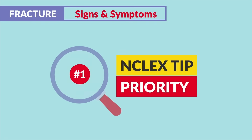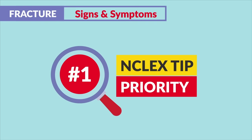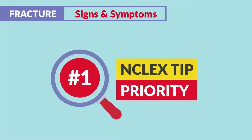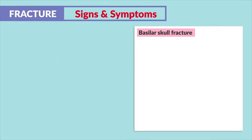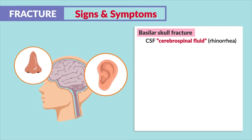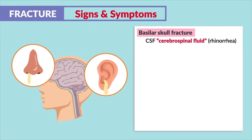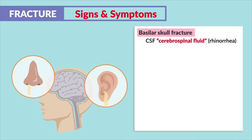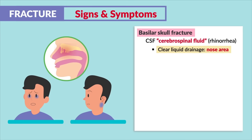Switching gears for some NCLEX priority findings on who to see first. For a basilar skull fracture, we see CSF — cerebral spinal fluid — draining from the nose, called rhinorrhea. Key terms: clear liquid drainage from the nose area. This is a priority patient.